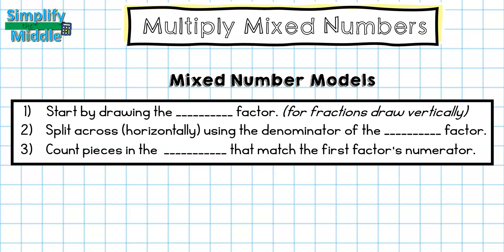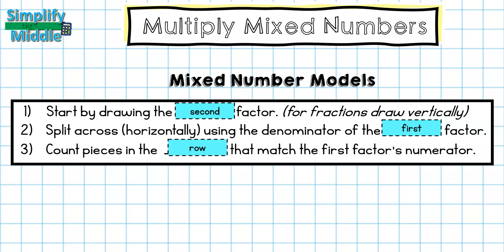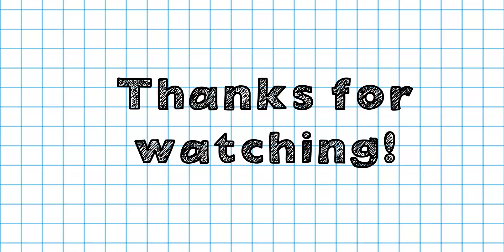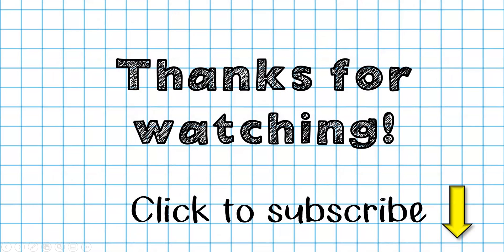Let's wrap up. For mixed number models: first, draw the second factor. Second, split across horizontally using the denominator of the first factor. Third, count the pieces in the rows that match the first factor's numerator. Thanks so much for tuning in — that wraps up our lesson. Feel free to click to subscribe for this and other videos. Until next time!